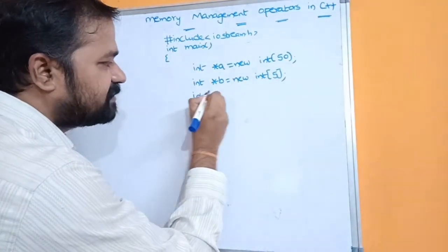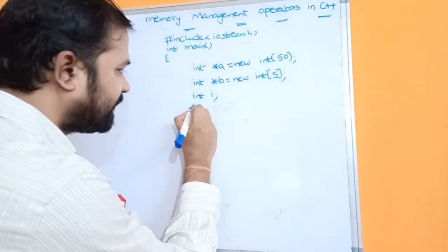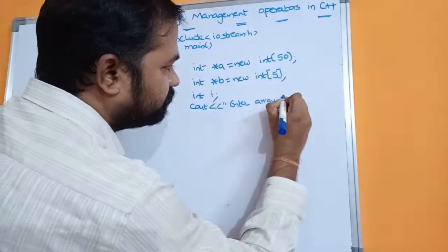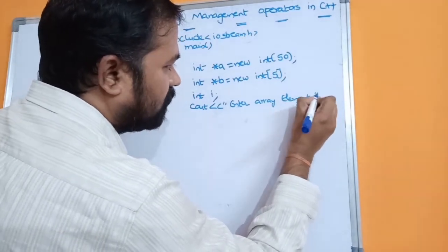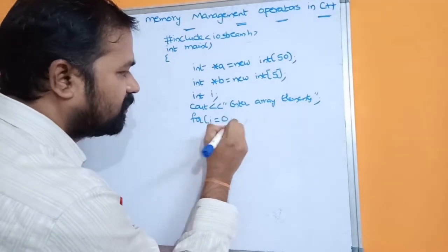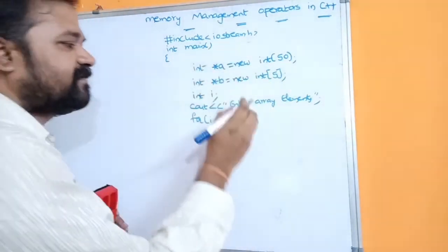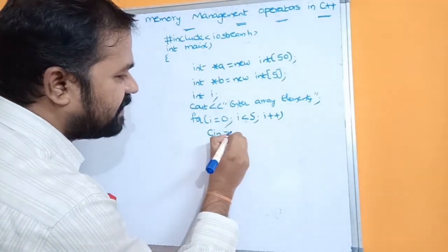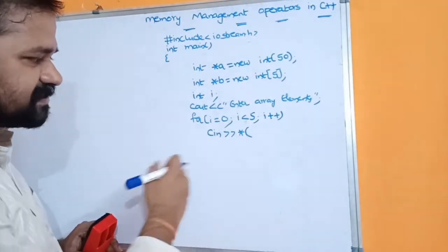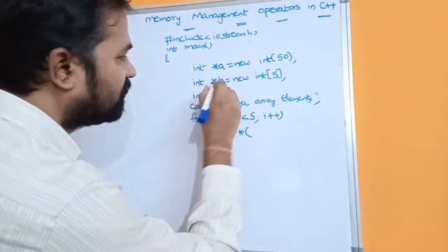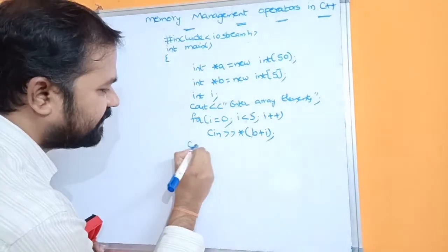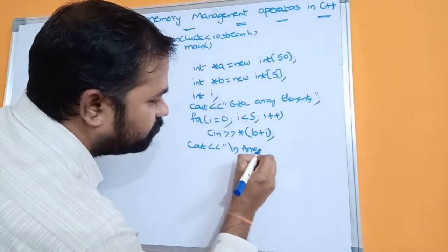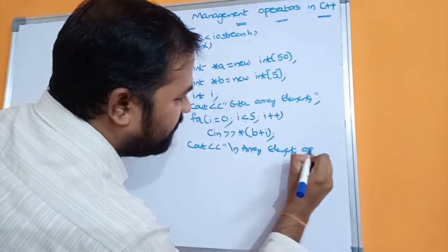Next, let us declare a pointer as an array: int *b = new int[5], allocating memory for 5 elements. We also declare a variable i. Before reading, let us display the message: cout << "\nEnter array elements". Then we use a for loop: for(i=0; i<5; i++) with cin >> *(b+i) to read each element into the array.